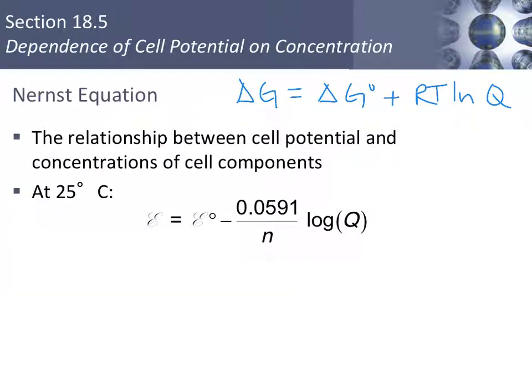The Nernst equation looks at the relationship between cell potential and the concentrations of the cell components. It is based on this equation that we talked about in chapter 17. Notice that the Nernst equation has the base 10 log, not the natural log. N represents the number of moles of electrons. And we have our standard cell potential and then our new cell potential once we've changed the concentration. Concentrations can be used to calculate Q. Again, remember, we are talking about concentrations that are not 1 molar.